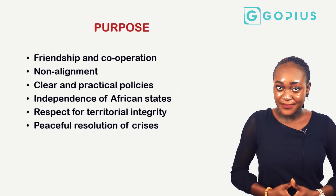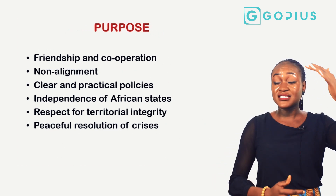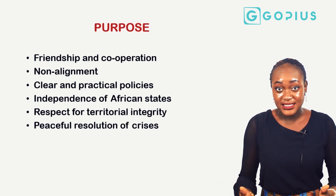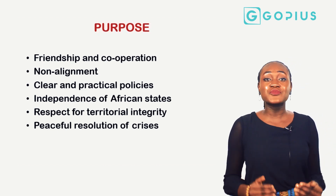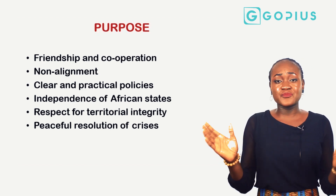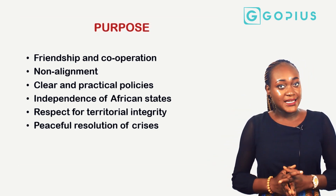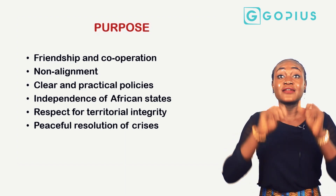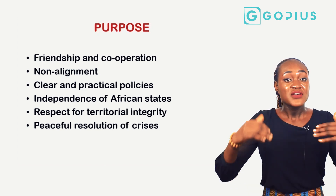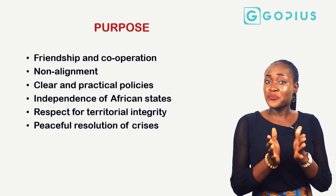First is for friendship and cooperation — countries have foreign policies at the international level to enhance friendship and cooperation among sister states. Again, non-alignment helps Nigeria especially not to be aligned to either the east or the west, each of which represents communism or capitalism. It also helps them make clear political and practical policies that would benefit their country at the international level.